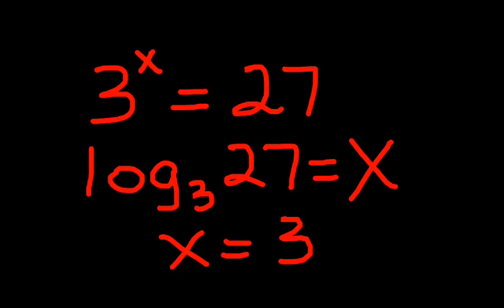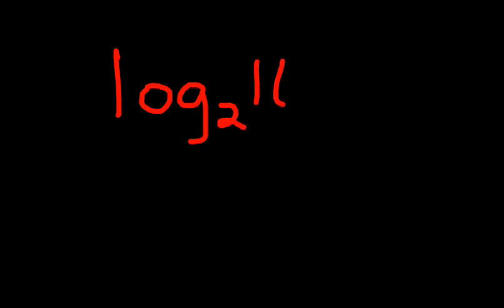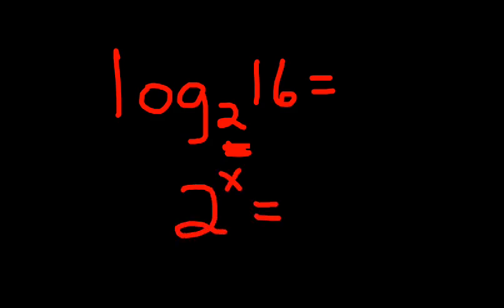So we're rewriting it into log form. Now let's look at what each of these parts actually means. I'm going to write log base 2 — we call this the base — of 16. 16 is called the argument, and then the number that it's equal to is actually the exponent. So the question is: 2 to what power is equal to 16? 2 times 2 is 4, times 2 is 8, times 2 is 16, so 2 to the 4th power is equal to 16. Therefore, the log base 2 of 16 is equal to 4.